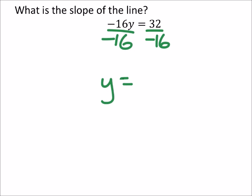So we got y equals negative 2, and really I could just make that a 0x minus 2. So I got my slope of 0, but however you remember it is up to you.